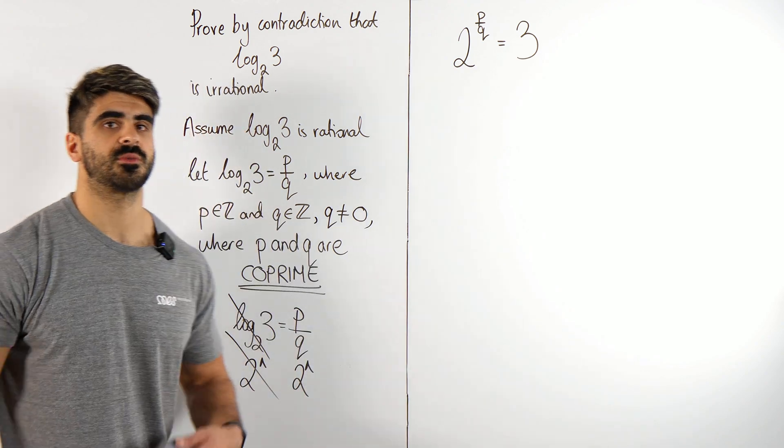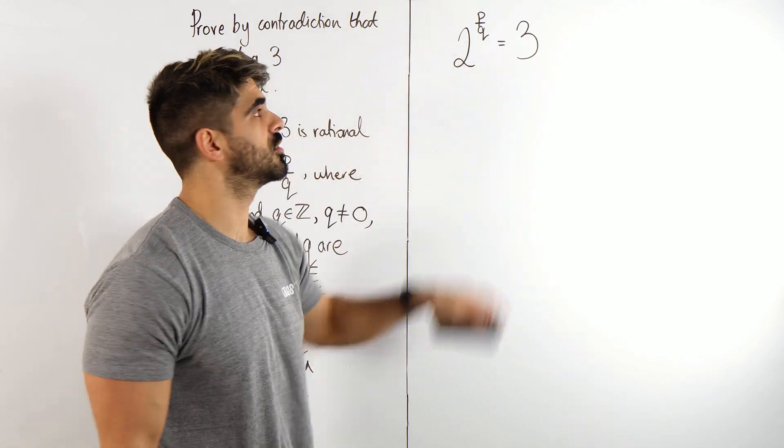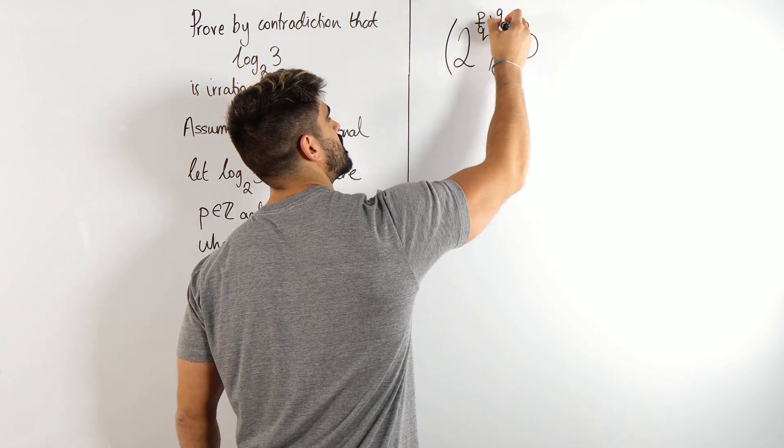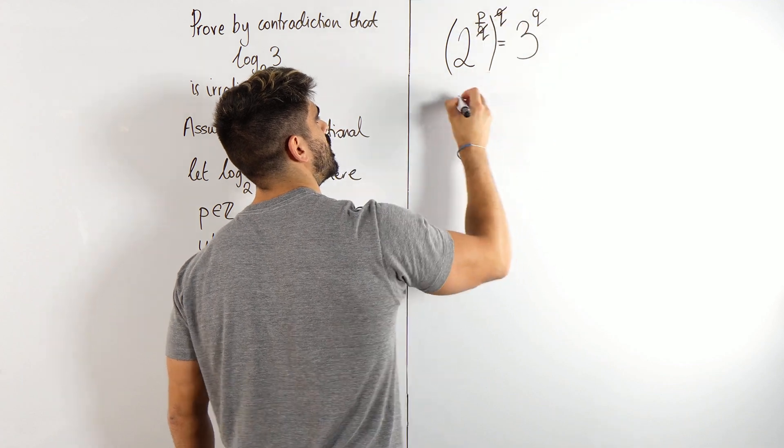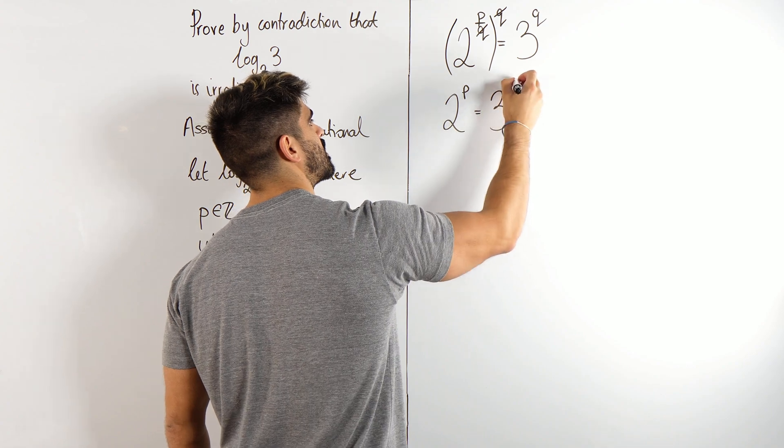Now the next thing we're going to do is we're going to get rid of the fractional power. We're going to get rid of that q. How do I do that? I'm going to use my index rules. I'm going to raise both sides to power q. That cancels. We're left with 2 to the power of p is 3 to the power of q.